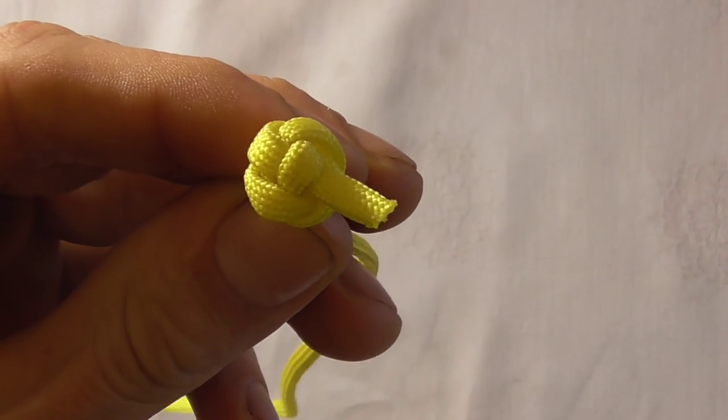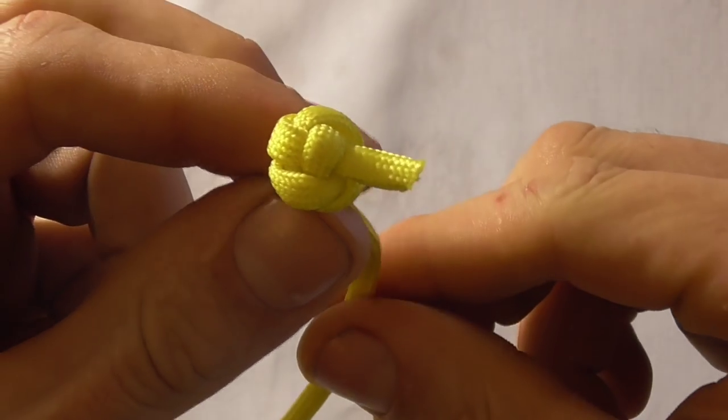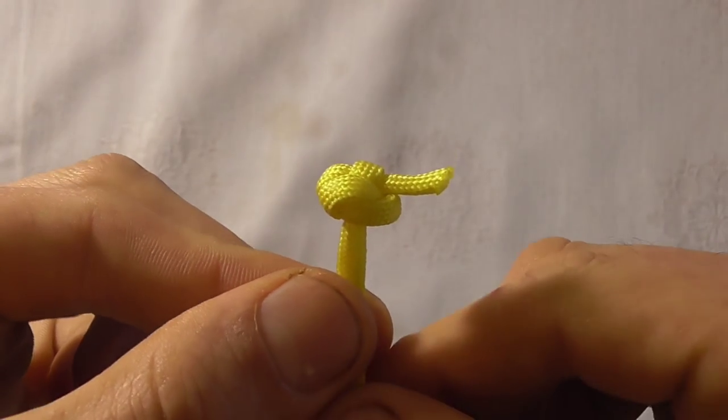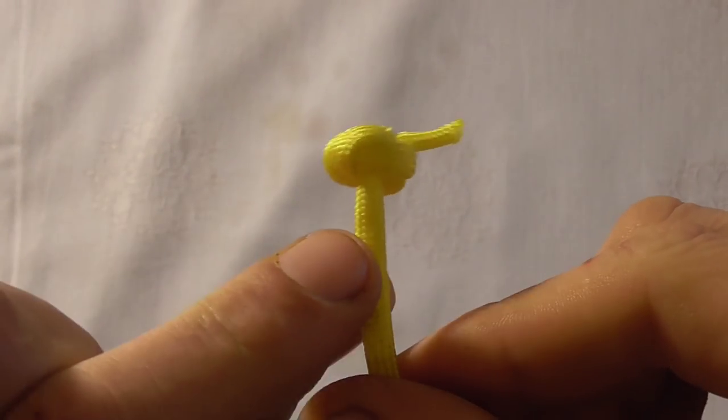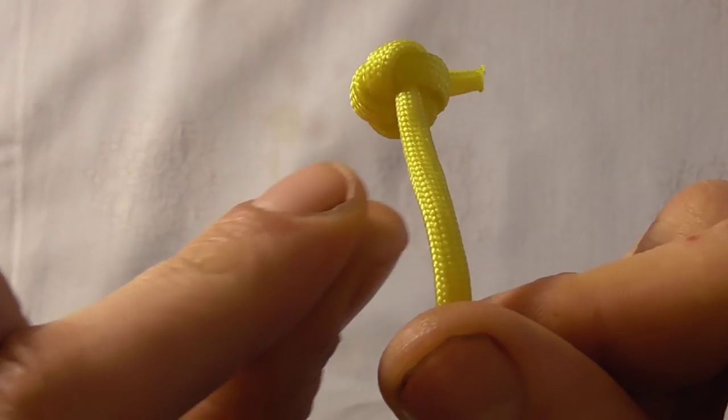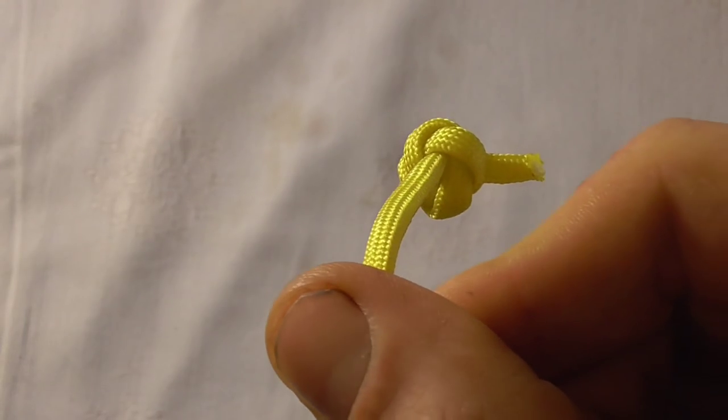So that's what the finished knot looks like. If you look at it from side on it should be a relatively flat looking knot. And then underneath you should see four lobes.